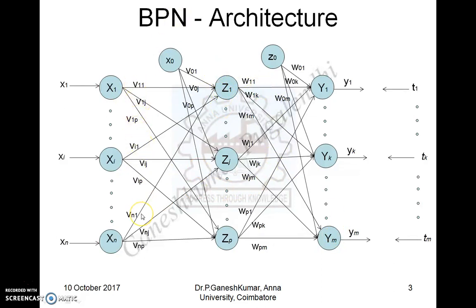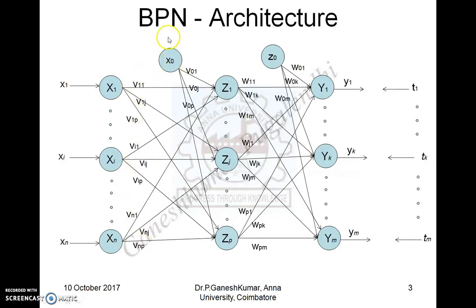In this architecture, the weights between the input layer and the hidden layer are represented using the letter V, and the weights between the hidden layer and the output layer are represented by W. The numberings are given for each weight parameter — for example, if a connection is from the first node of the input layer to the first node of the hidden layer, the weight suffix is V11. If the nth node is connected to the jth node of the hidden layer, the weight is Vnj. The same terminology is followed for weights between the hidden layer and the output layer.